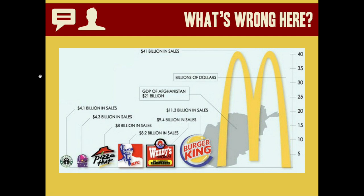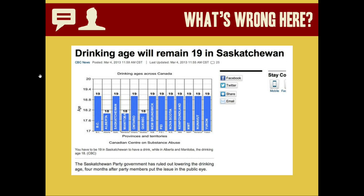Here's another one. This is from a news story about lowering the drinking age across Canada. There was a vote to determine if the drinking age would be lowered from 19 to 18 in the province of Saskatchewan and the vote failed. So they provided this handy dandy graph to demonstrate the drinking age across different provinces and territories. What's wrong with this? So many things.